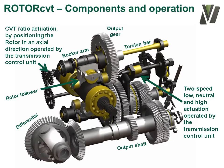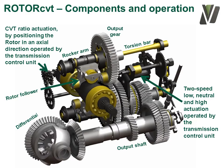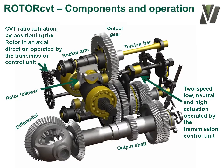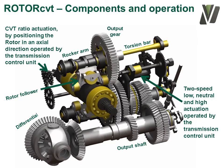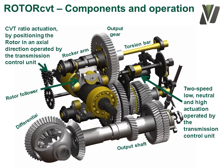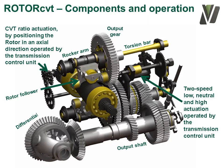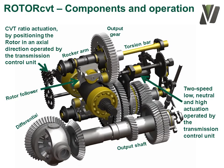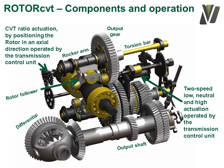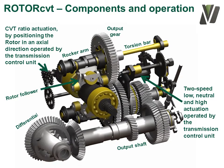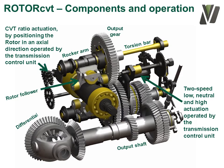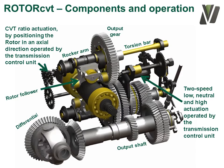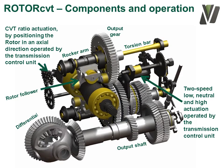The two-speed gearbox will shift to its second ratio when the selector fork moves to the left. Note that the overall ratio between the engine and wheels before and after the shift took place remains the same.